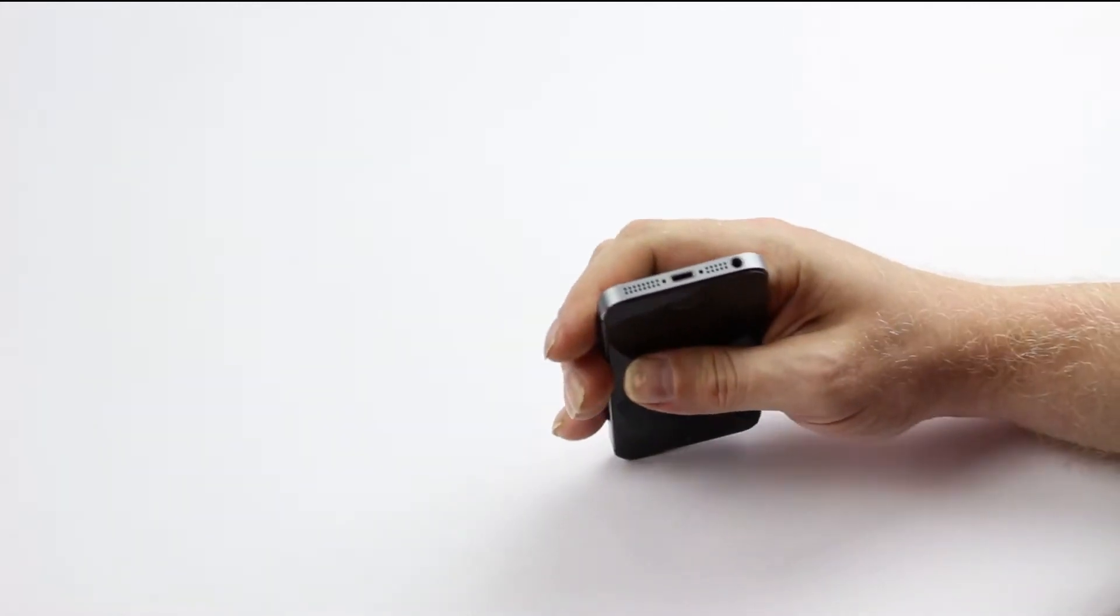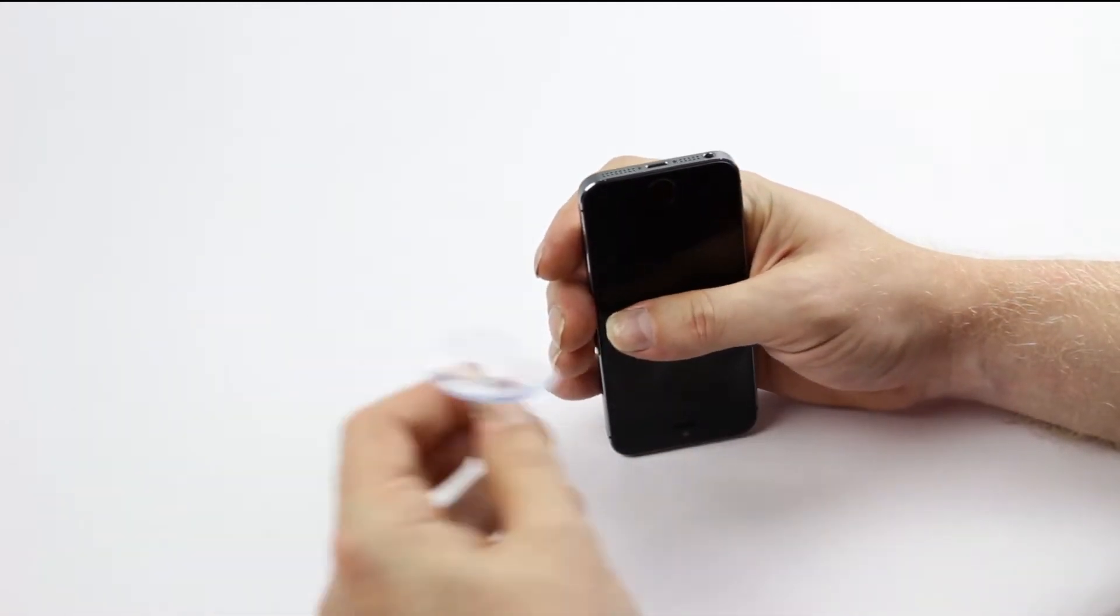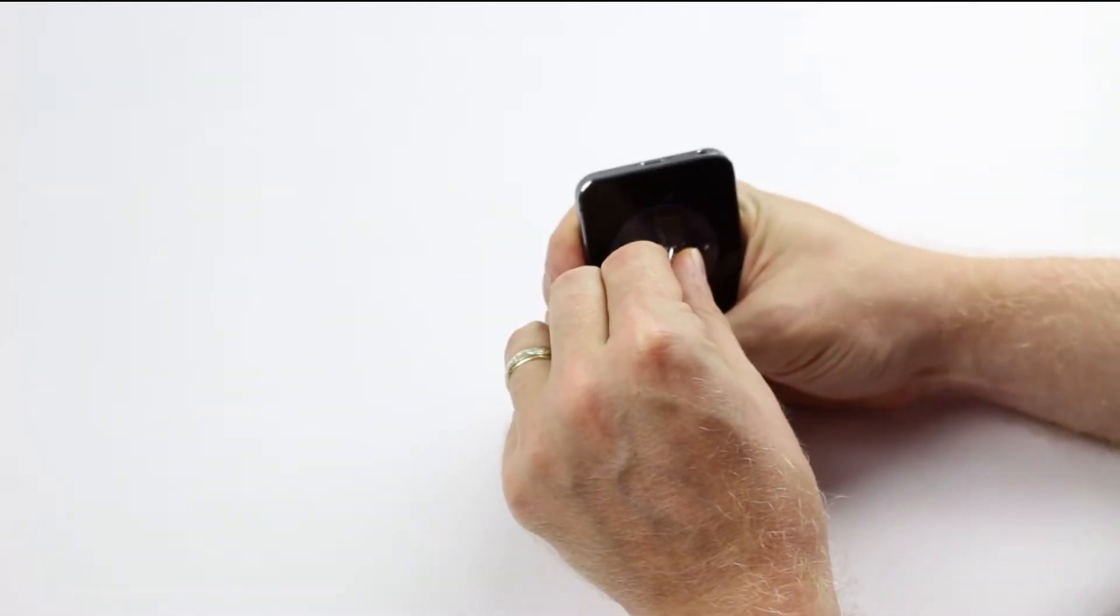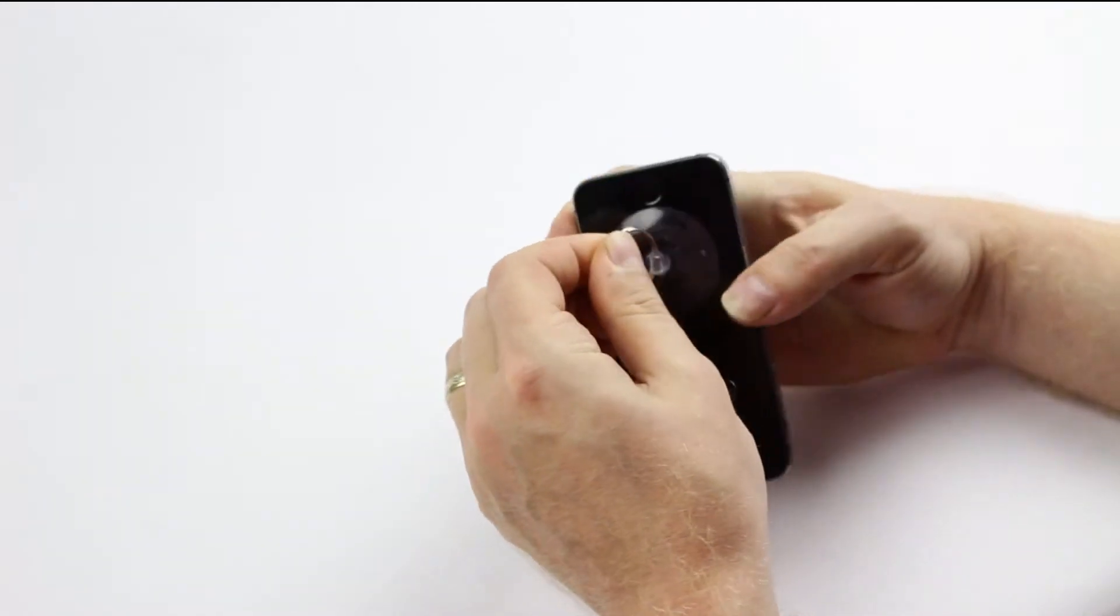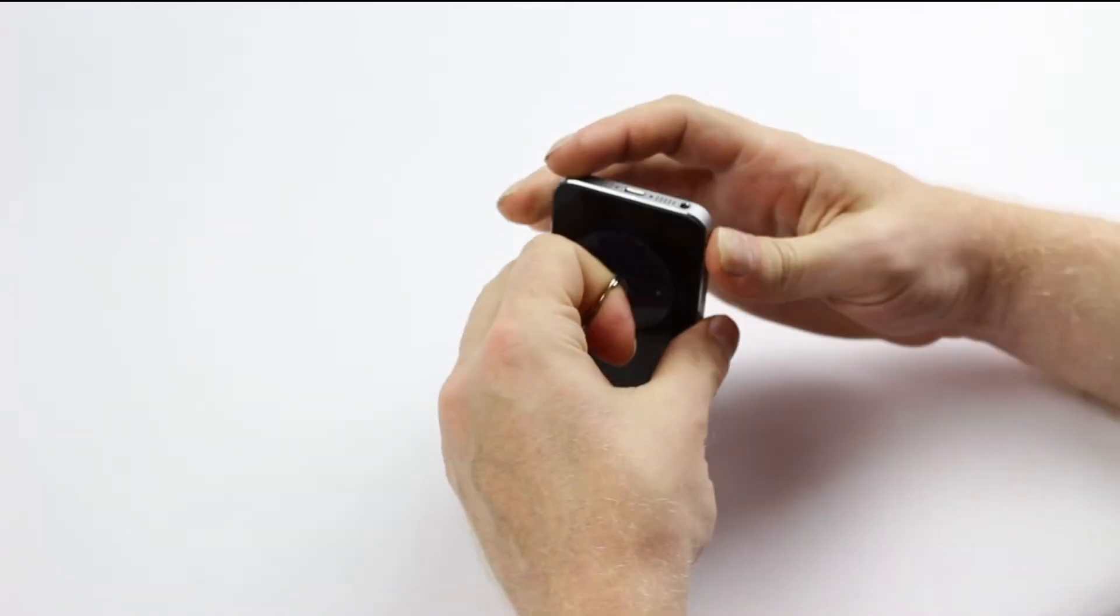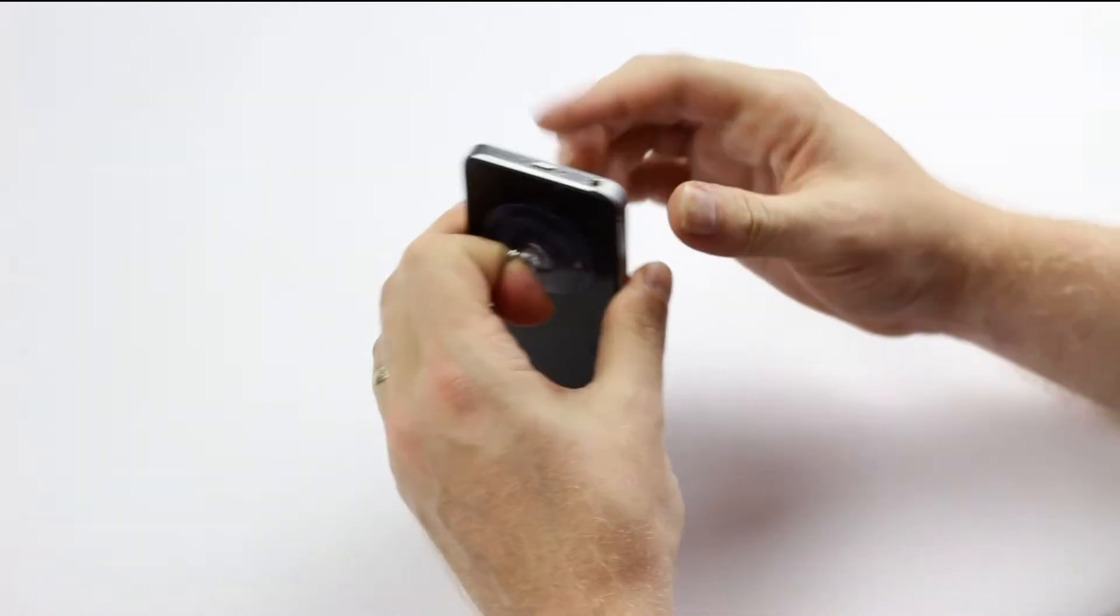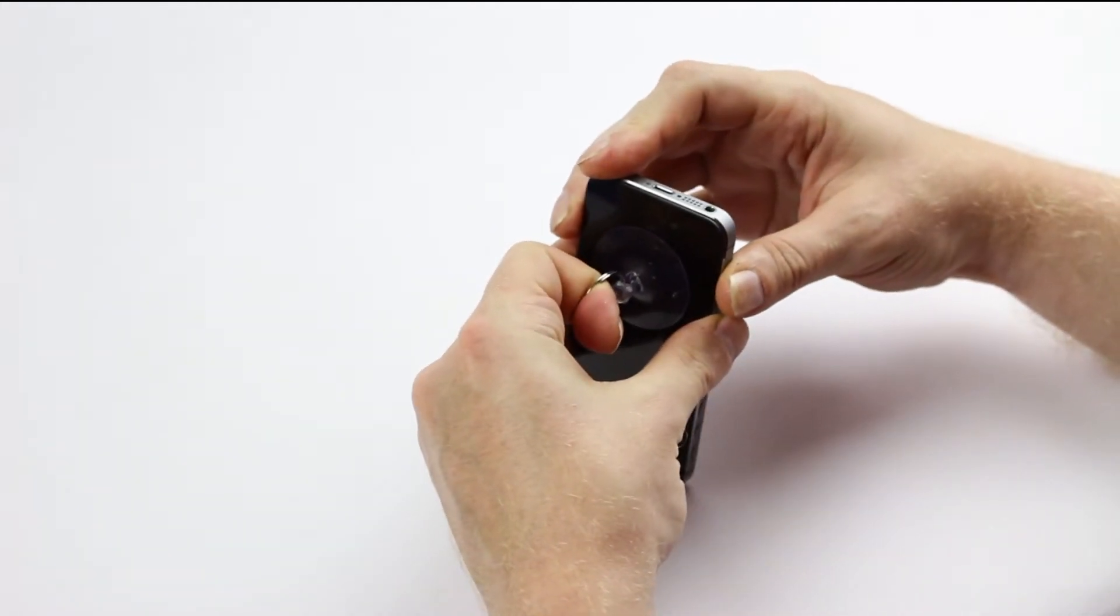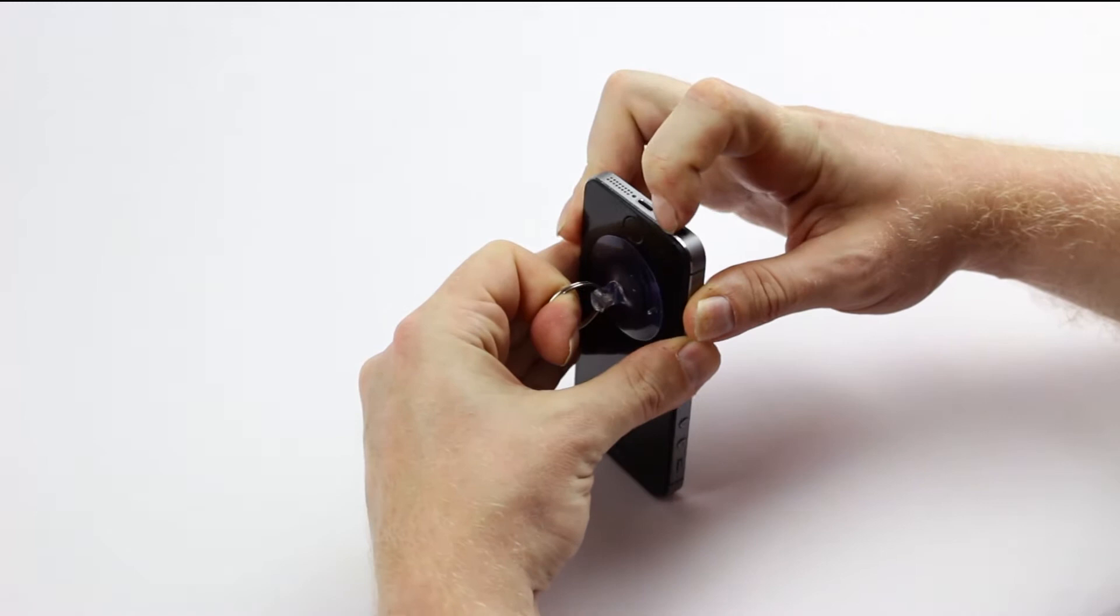So I will now go ahead and, using the sucker, I will place the sucker just above the home button, not over the home button, dead center in the middle of the screen. And then using my two fingers on either side of the chassis and my forefinger, I'll pull gently, and as you can see, it starts to lift.